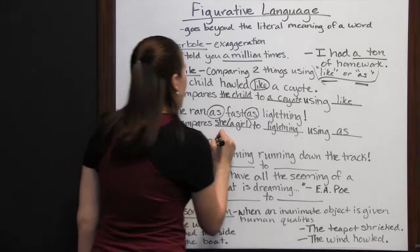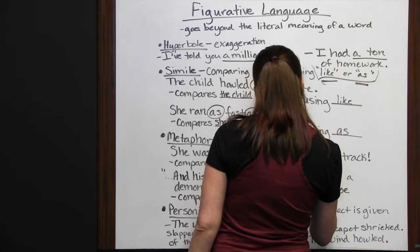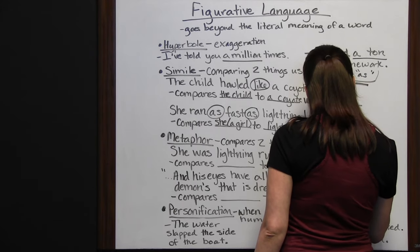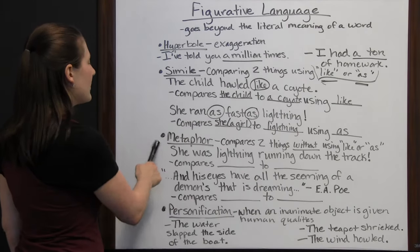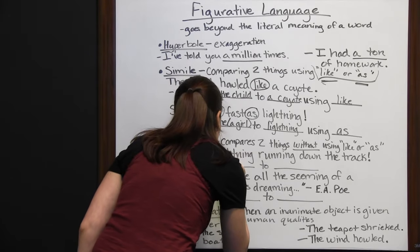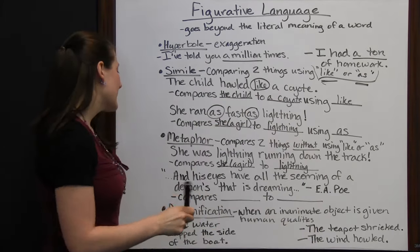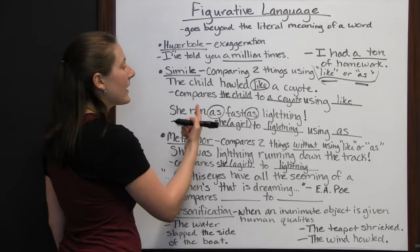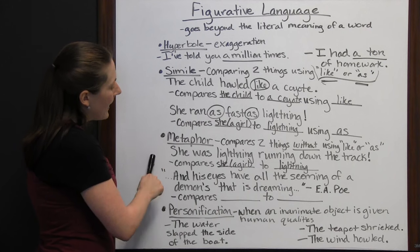It could be a metaphor, which compares two things without using 'like' or 'as.' That is really the big difference between a simile and a metaphor — a simile uses 'like' or 'as,' a metaphor does not. For example: 'She was lightning running down the track.' This is very similar to the simile, both comparing a girl to lightning, but this one just says 'she was lightning' without using 'like' or 'as.'